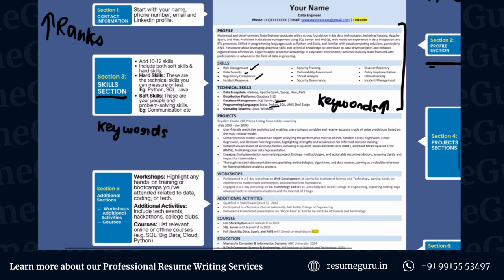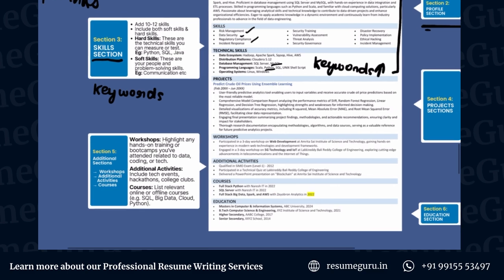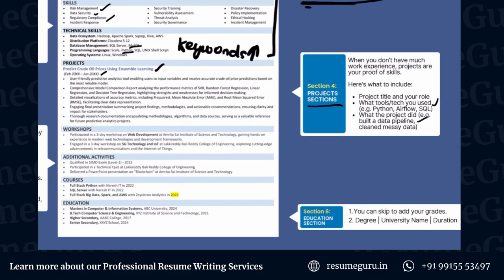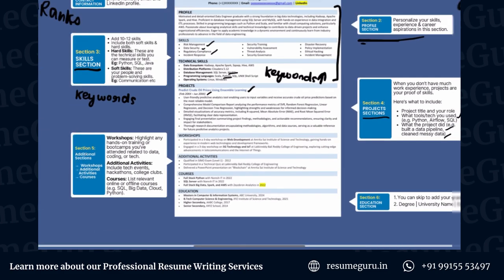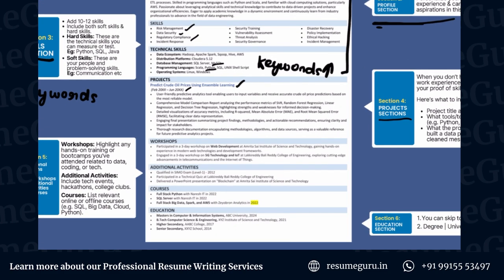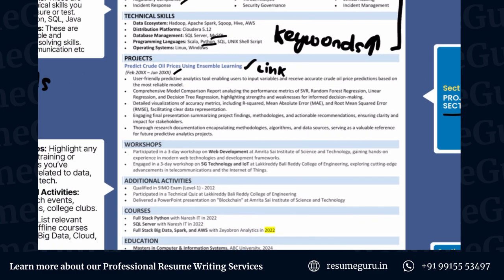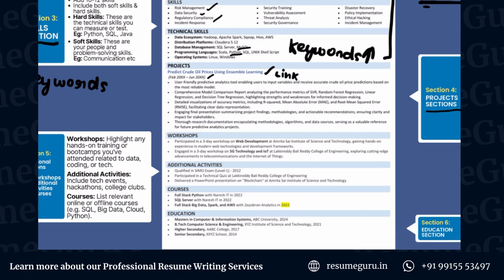Next, let's move to the project section. This is kind of a fresher resume, so there's only a project section here, but you can also replace it with a work experience section. In the project section, you provide the title of the project, a date range for when you worked on it, and a few bullet points explaining what you actually did — what tools and tech you used, what the project did, for example built a data pipeline or cleaned messy data. As a bonus, you can even include a GitHub link or any other resource link to increase your credibility.